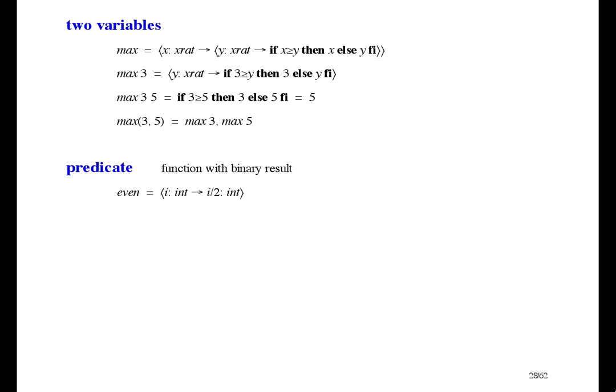If a function has a binary result, we call it a predicate. This function tells whether its argument is even or not. And if a function has a predicate result, we call it a relation. So a relation is a function of two variables that has a binary result. The divides function here tells whether its first argument divides into its second argument with no remainder. That makes the even function equal to the divides function applied to the single argument, 2.